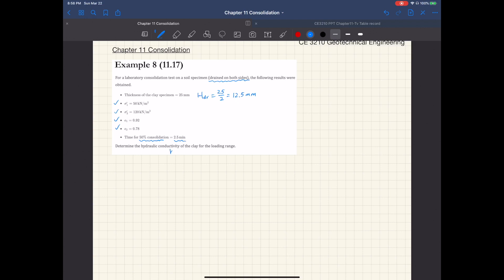Just as the previous example, we're going to make use of this expression that relates coefficient of consolidation cv to hydraulic conductivity k through this coefficient of volume compressibility mv in unit weight of water. So this mv is coefficient of volume compressibility.